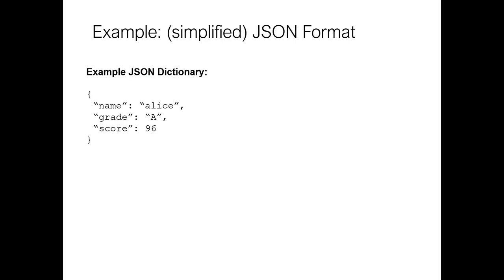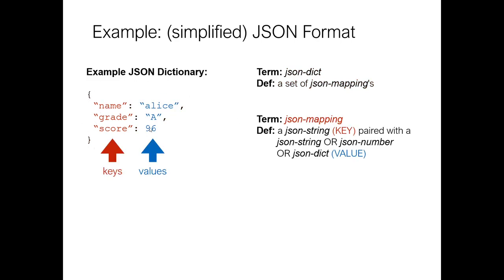Even something like file formats — here we have a simplified JSON format. A JSON dictionary is a set of JSON mappings. A JSON mapping is a JSON string (the key) paired with a JSON string, JSON number, or JSON dictionary. So it's not direct recursion — it's indirect. I'm going through another definition via JSON mappings, but eventually it comes back around. Here under exams I've added another dictionary as a value, and the midterm and final can each be yet another dictionary.